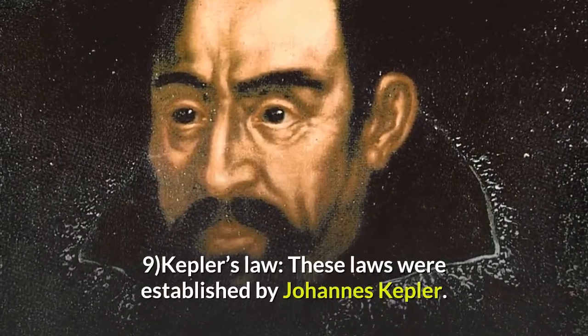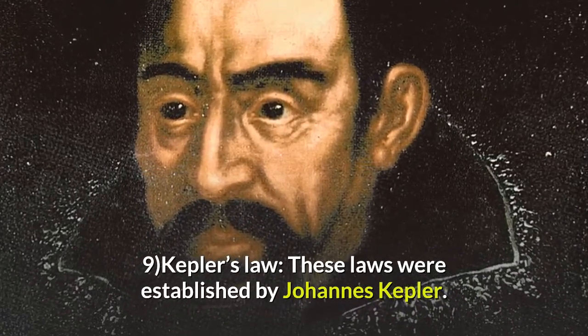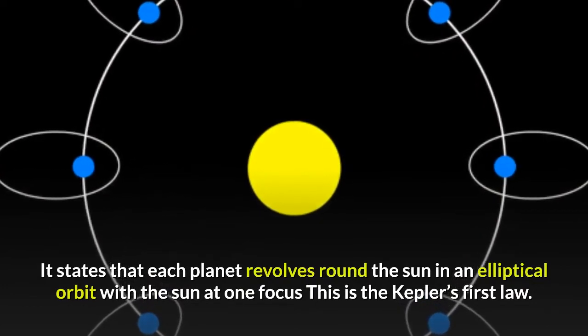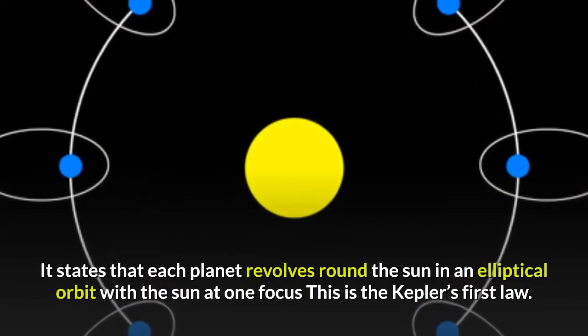Number 9: Kepler's Laws. These laws were established by Johannes Kepler. The first law states that each planet revolves around the sun in an elliptical orbit with the sun at one focus.